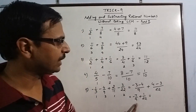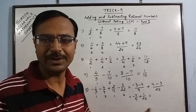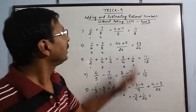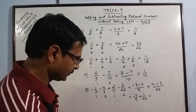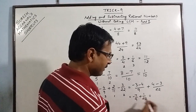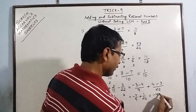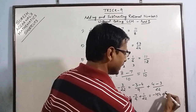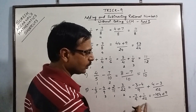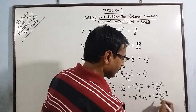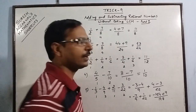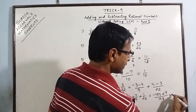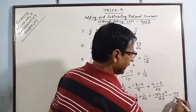Now we notice that 9 and 22 do not have a common factor between them, so we apply the method from trick number 8. 22 times 7 gives 154, plus 9 times 1 gives 9; in the denominator 22 times 9 is 198. So the final answer is minus 145/198.